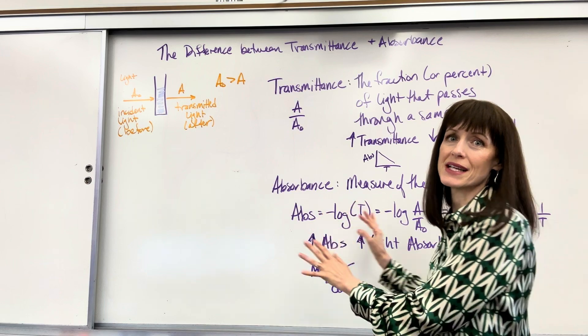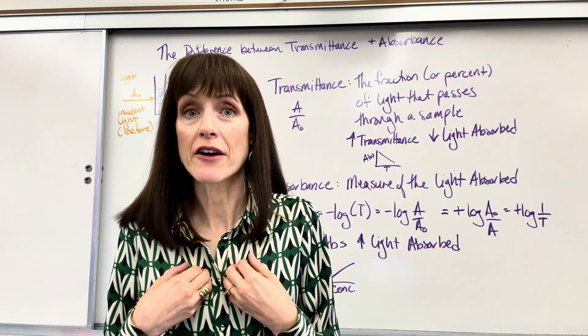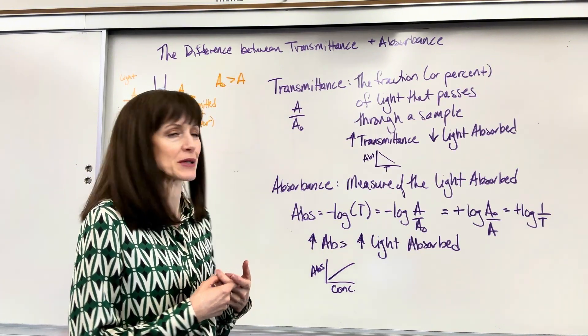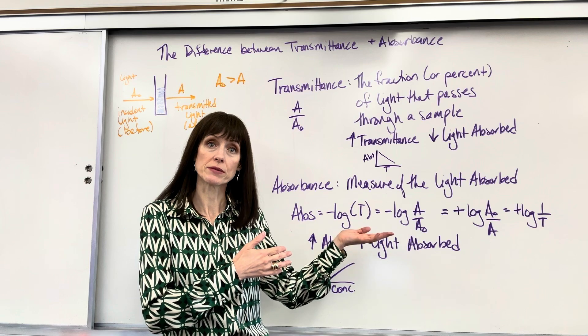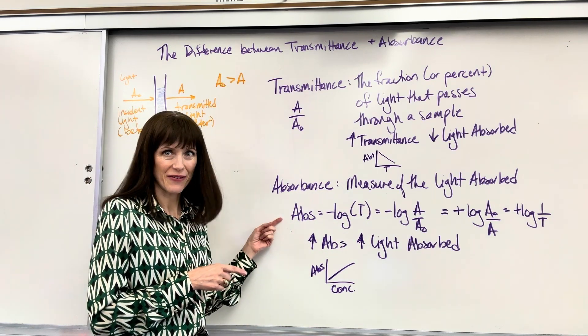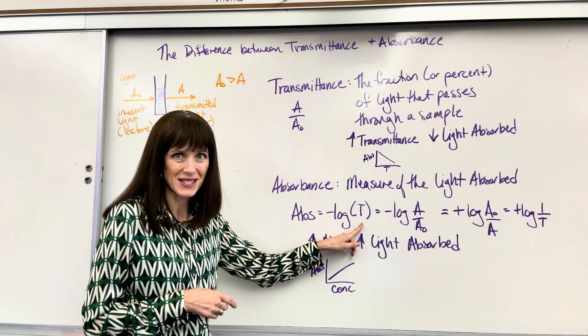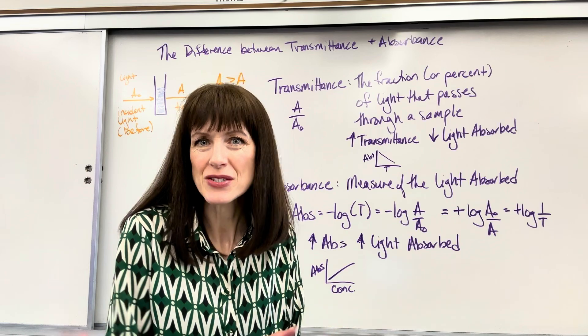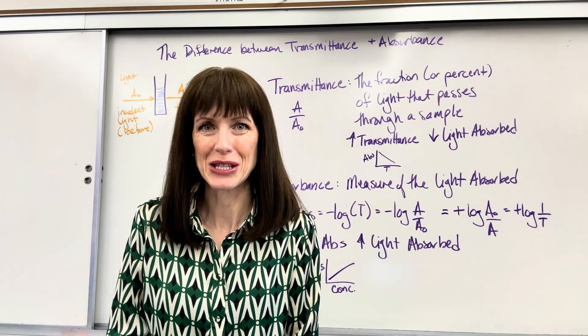Now absorbance. And this is usually what we measure, this is what I have my students measure, is absorbance when we do our spectrophotometry. Absorbance is the measure of light absorbed. How much light was absorbed? Check it out. Here's your definition. Absorbance is the negative log of transmittance. Now you'll see this a couple of different ways based on your professor, based on your textbook. So I wanted to give you every possible way I could think that you would see this.